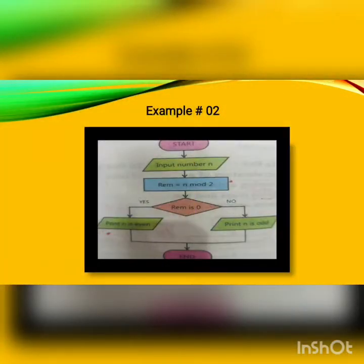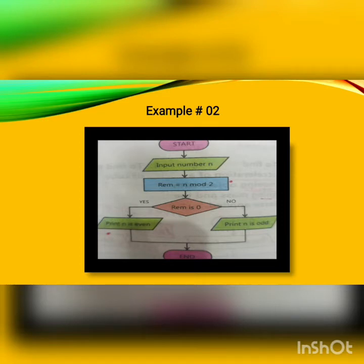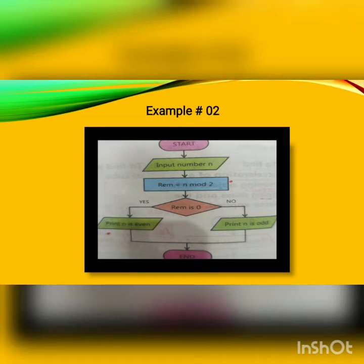Here is another example which is used to determine whether a given number is odd or even. After the starting step, a numeric value is taken from the user and stored in computer memory with the name n. This value is divided by 2 and the remainder is stored with the name rem. The mod function is applied to calculate the remainder. If rem equals zero, the condition is true and n is even; if rem is not zero, the condition is false and n is odd.